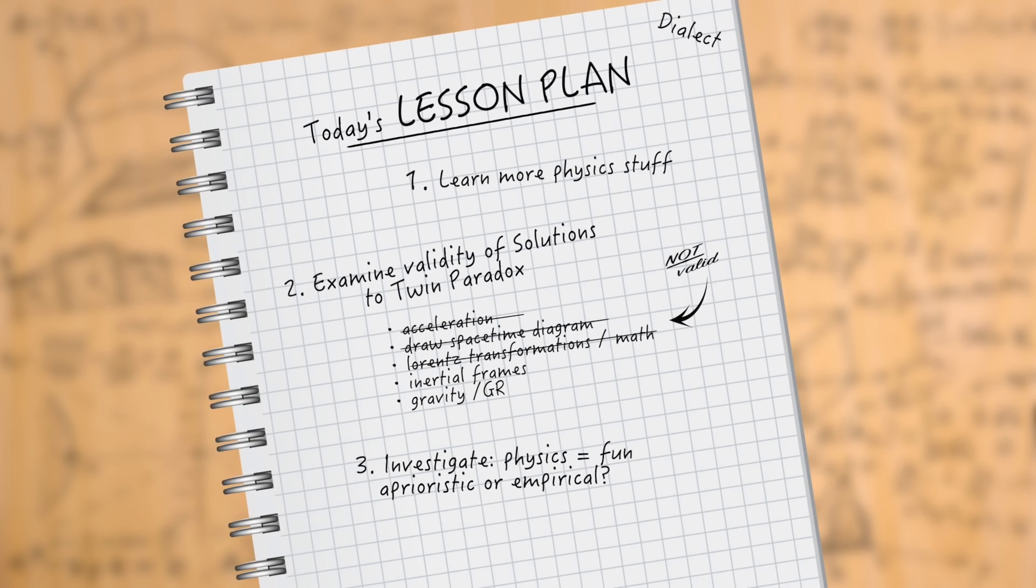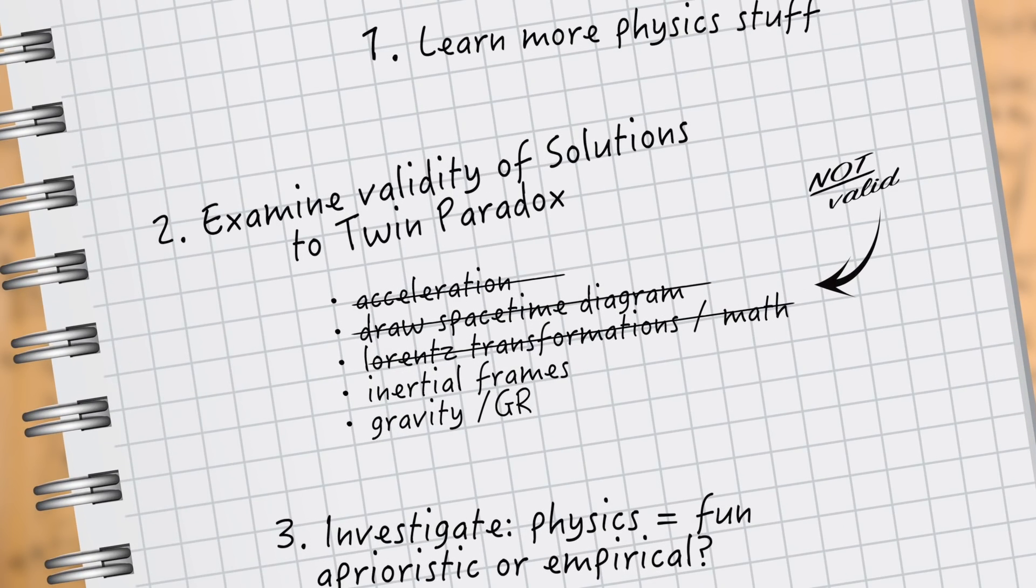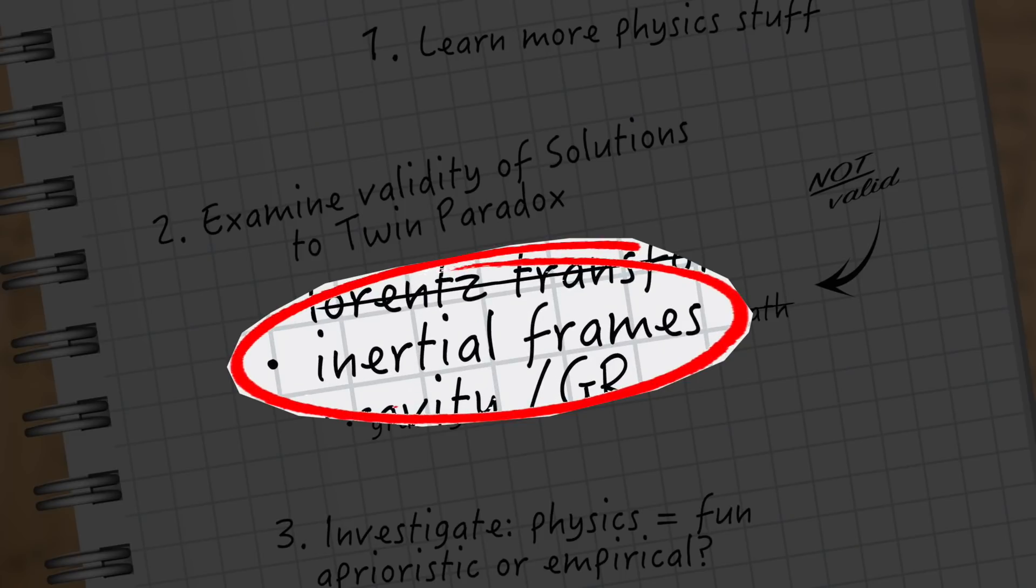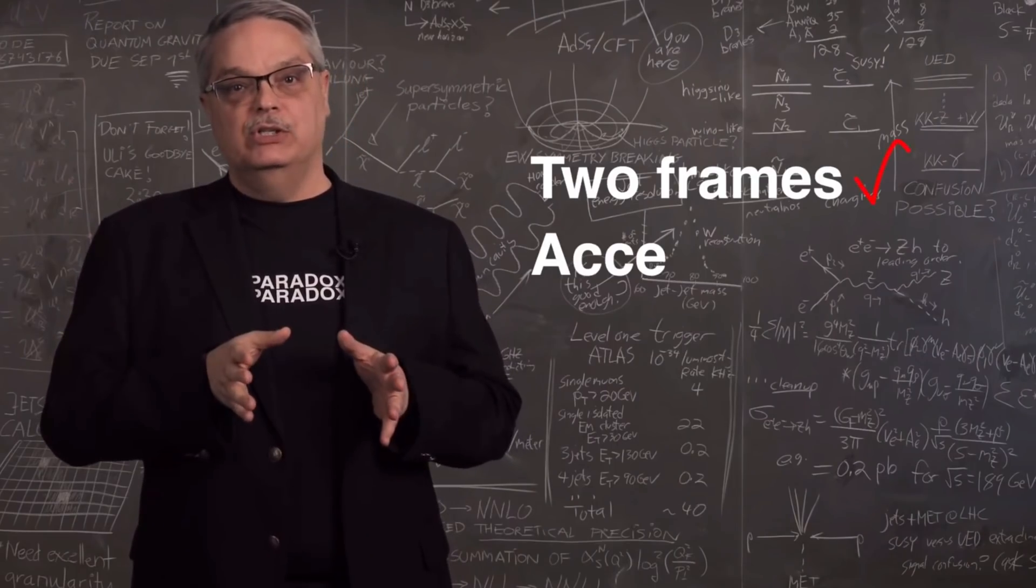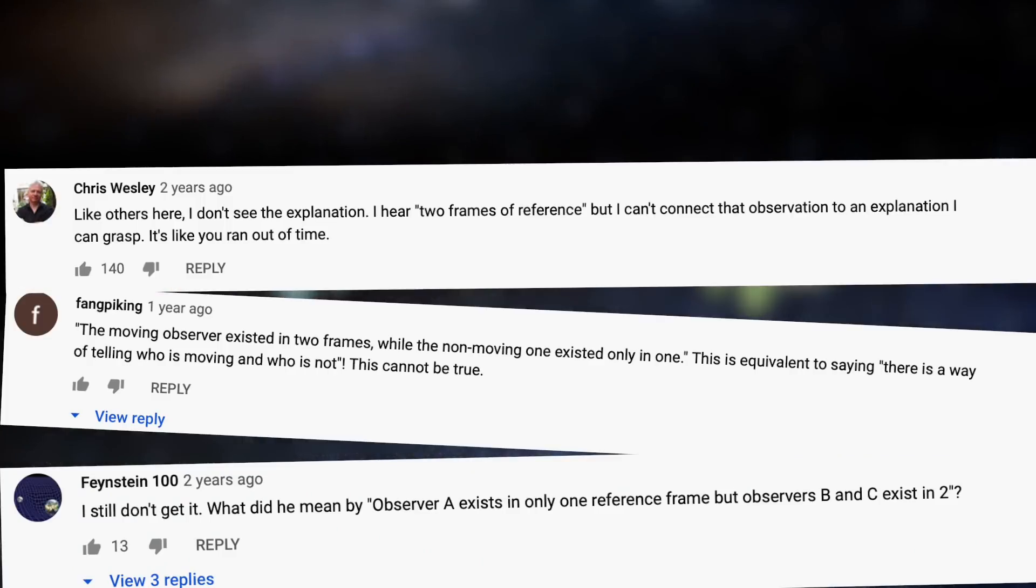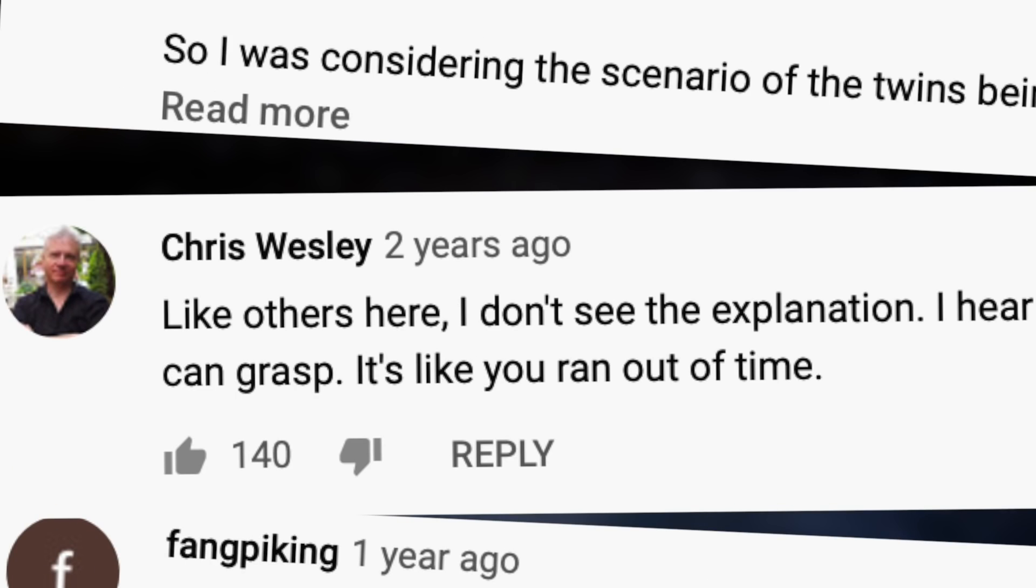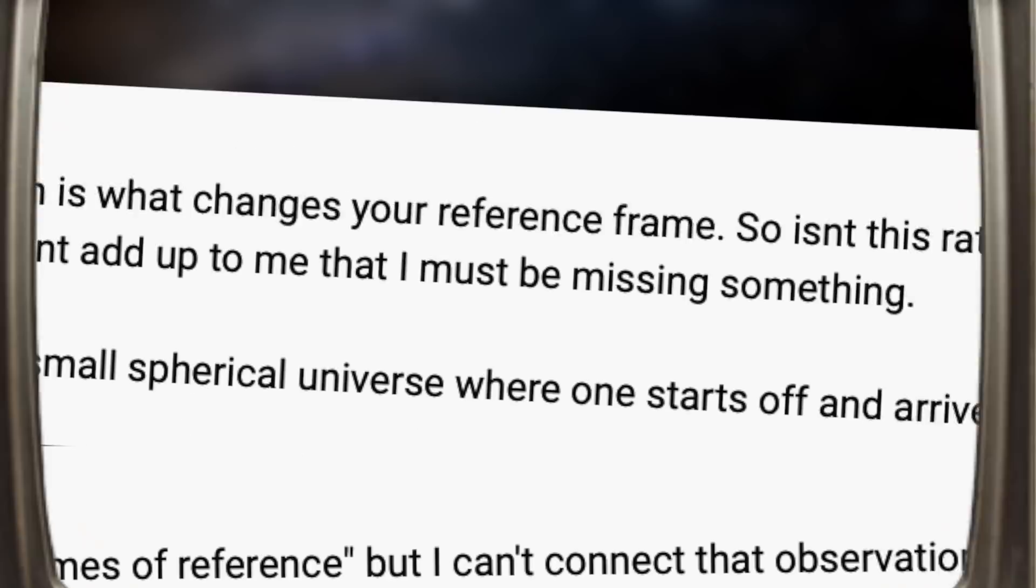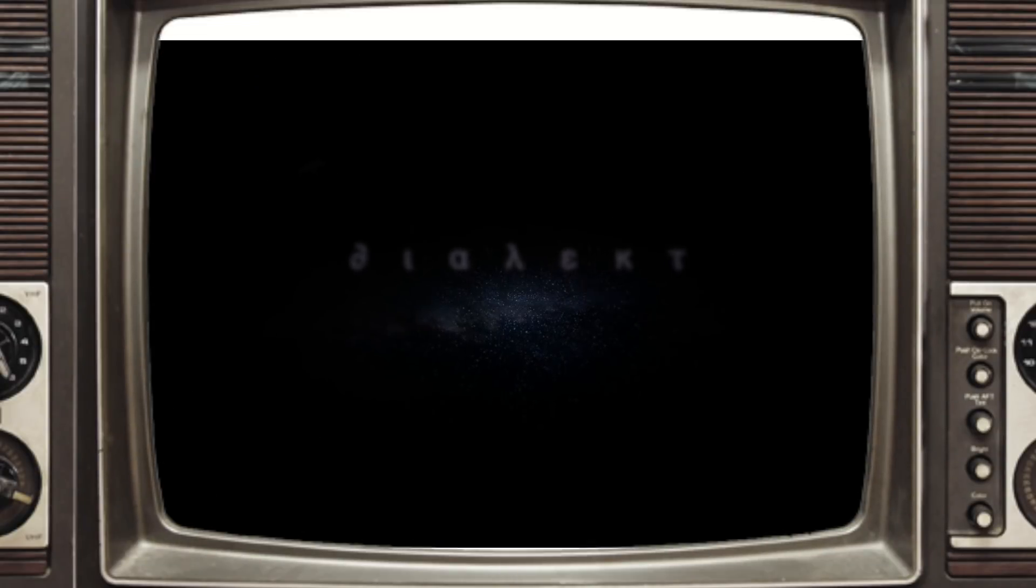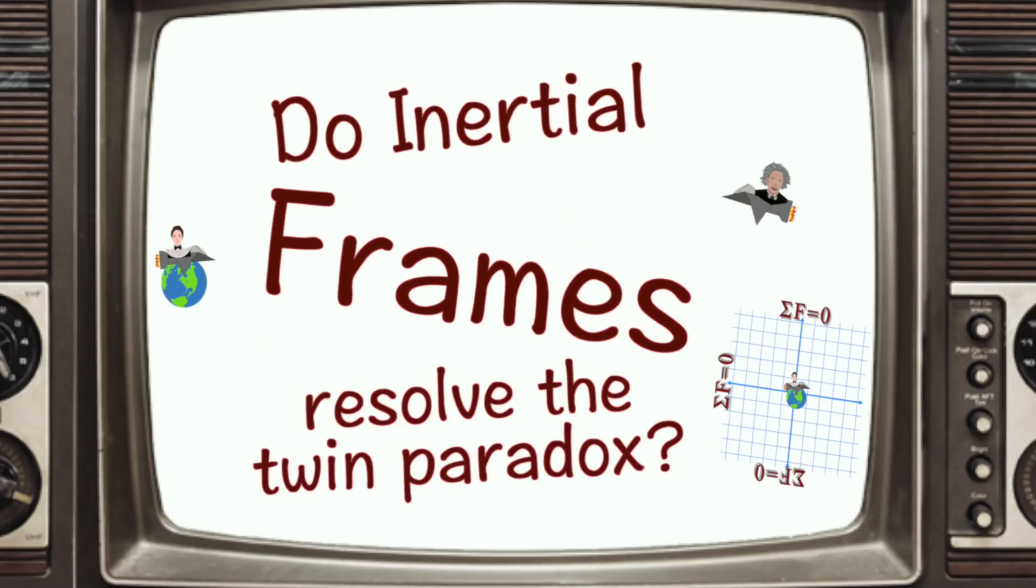And so today, we're going to tackle one of the more sophisticated solutions. This is the inertial frames solution. Its proponents are adamant that it's the only correct answer to the twin paradox. But does it really resolve the paradox? Or is it just a fancier way of disguising the problem? This is Dialect with Do Inertial Frames Resolve the Twin Paradox?